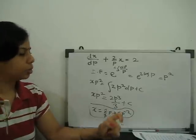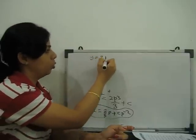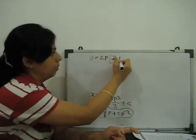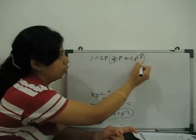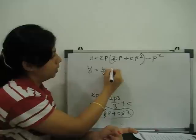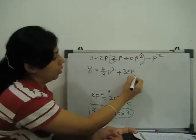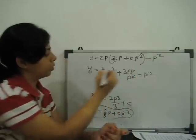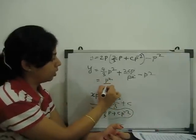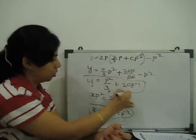This value of x we substitute in equation, given equation. What is our given equation? Given equation number 1 is y is equal to 2px. At the place of x we can substitute this value. This value is 2 by 3p plus cp to the power minus 2 minus p square. So, our y is equal to 2 times 2, 4 by 3p plus cp to the power minus p square. So, 4 by 3 minus p square gives p square by 3 plus 2cp to the power minus 1.